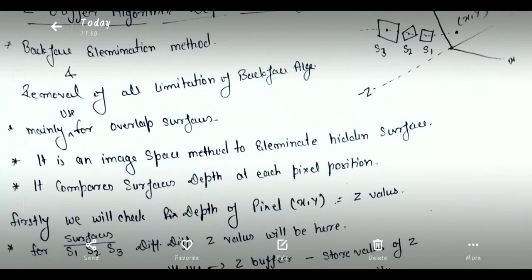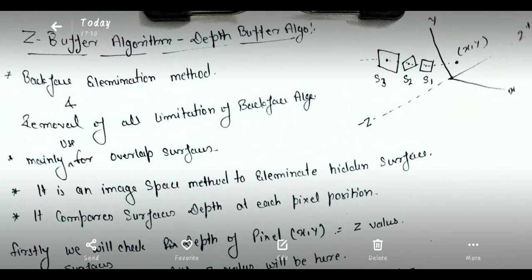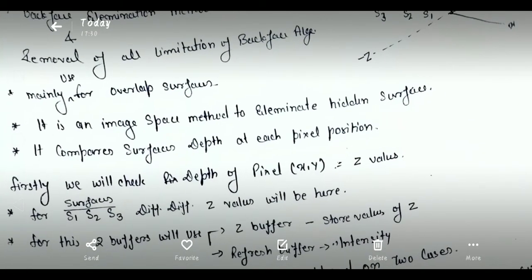This algorithm compares surface depth at each pixel position. Depth means: if one object is there and behind it there are overlapping surfaces, we have to check each pixel's intensity on every surface. Calculating the intensity value of S1, S2, and S3 for every surface at each pixel is called the depth of each pixel position.